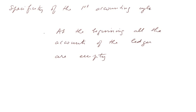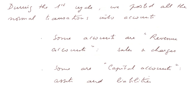Specificity of the first accounting cycle: it's very simple. At the beginning, all the accounts of the ledger are empty. During the first cycle, we posted all the normal transactions in two types of accounts. Some accounts are called revenue accounts — these are the sales and the charges of the year. And some are capital accounts: assets and liabilities. We begin to be familiar with these.